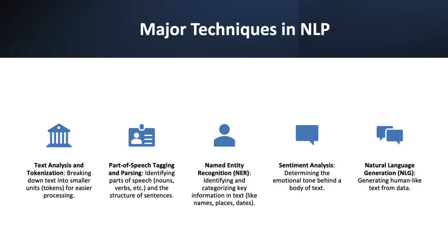Part of Speech, POS, Tagging and Parsing are key processes in NLP that involve identifying the grammatical parts of speech — such as nouns, verbs, adjectives, etc. — in a given text, and understanding the structure of sentences. POS Tagging assigns labels to each word, or token, in a sentence to identify its grammatical role, while parsing analyzes the grammatical structure, identifying relationships between words and how they connect to form meaningful sentences. This is essential for understanding the syntax and grammatical nuances of language.